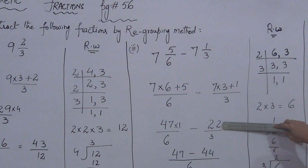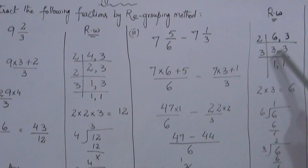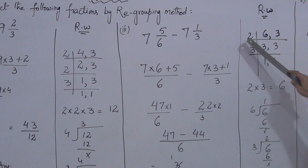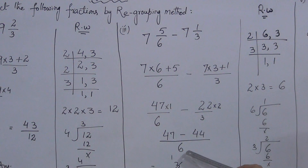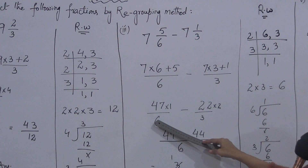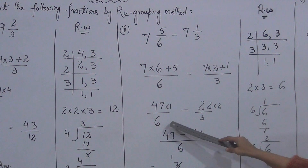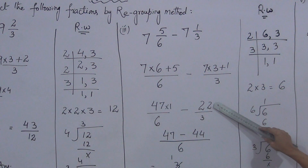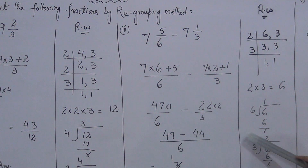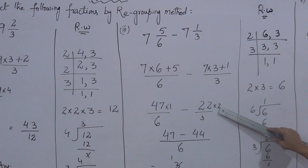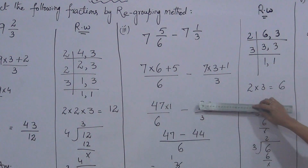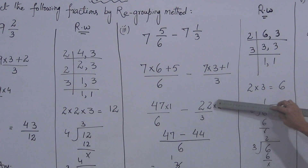After converting to improper fractions, we perform the same steps. We find the LCM of the denominators 6 and 3. Using the prime method: 2 divides into 6 giving 3; 3 remains. Then 3 divides into 3 giving 1; 3 divides into 3 giving 1. So LCM = 2 × 3 = 6. The common denominator is 6. We divide 6 by denominator 6 giving 1, which multiplies the first numerator 47 × 1 = 47. We divide 6 by denominator 3 giving 2, which multiplies the second numerator 22 × 2 = 44.